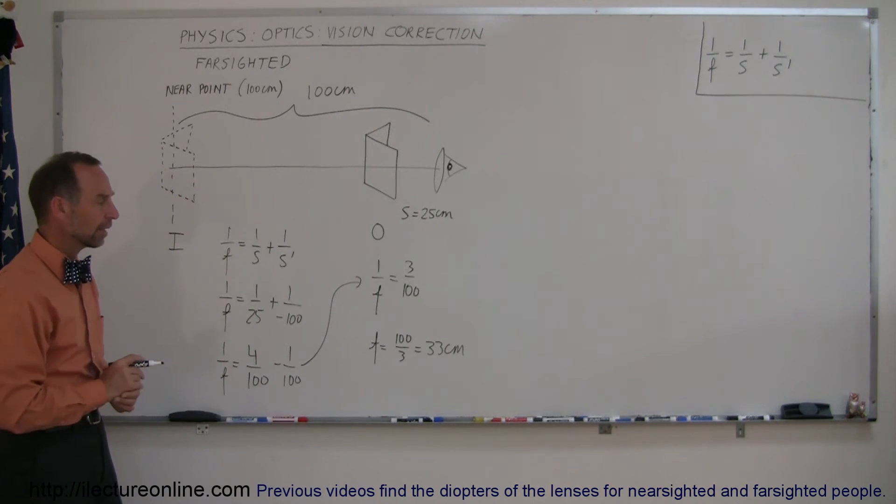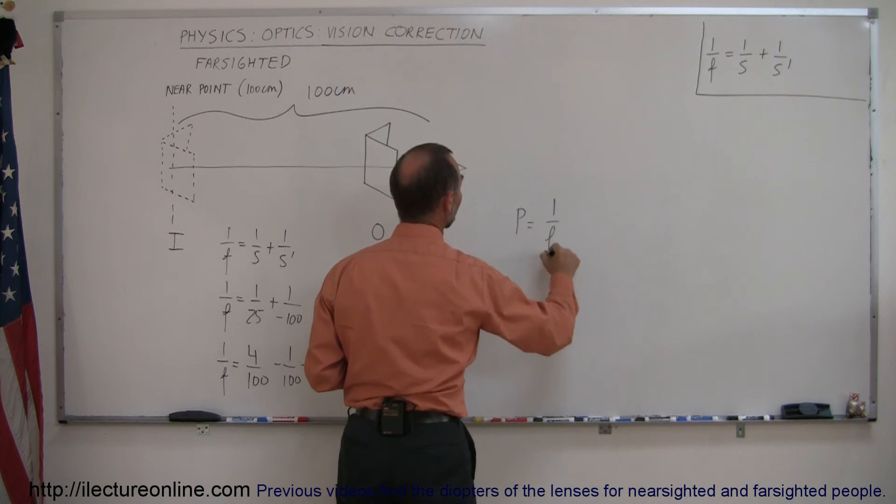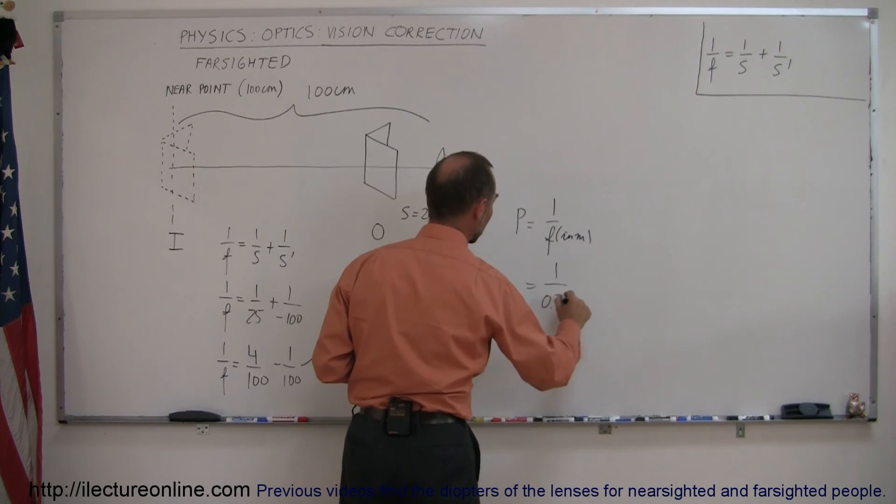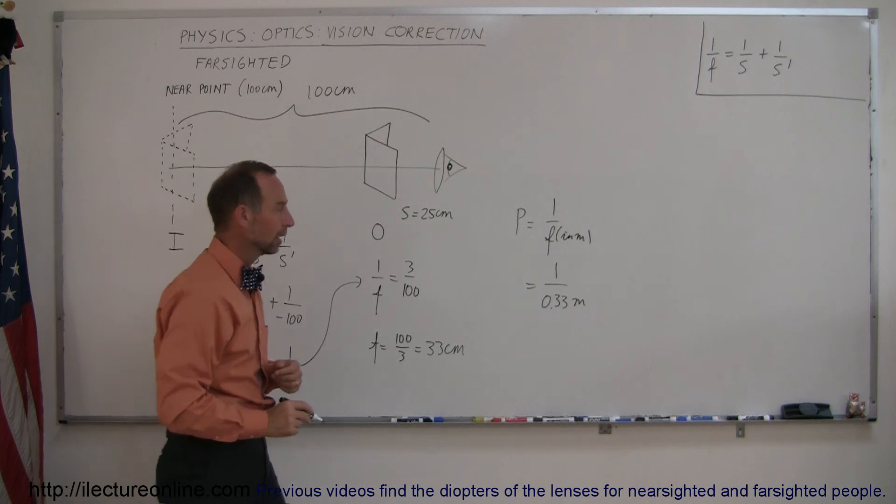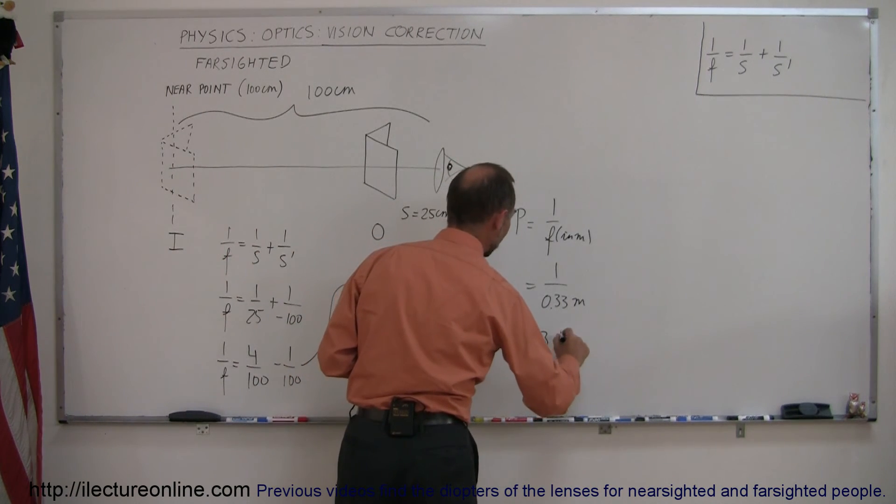All right, so that's the focal length of the lens. So what should the power of that lens be? Well, the power, by definition, is 1 over the focal length expressed in meters. So this is 1 over 0.33 meters, because 33 centimeters is 0.33 meters, and that would then be equal to 3 or plus 3 diopters.